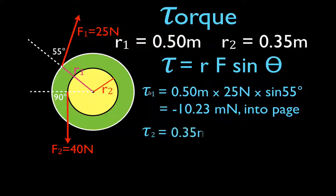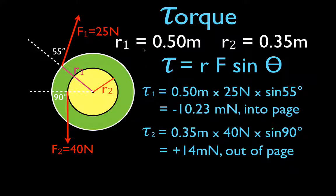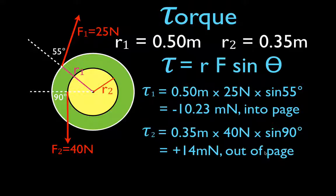For torque produced by force number two, we do the same — r times F times sine of theta — and get positive 14 newton-meters. This force, acting by itself, would cause the wheel to rotate counterclockwise. Forces causing counterclockwise rotation produce positive torque. Since it's counterclockwise, the torque vector for force two is directed out of the page.